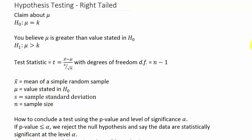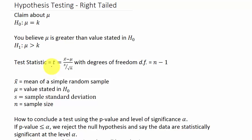For hypothesis testing we have the claim about mu, the population mean. H naught states mu is equal to some number, and the alternate hypothesis is that mu is greater than the value stated in H naught — maybe based on a sample we have. For a right tail it's greater than, so our alternate hypothesis would be mu is greater than k. We calculate a t value using the Student's t distribution; this is when sigma is unknown. If sigma is known, we use the normal distribution.